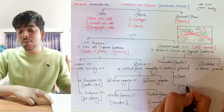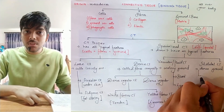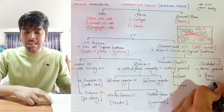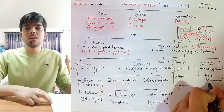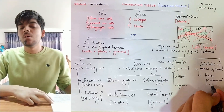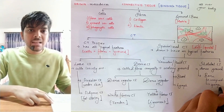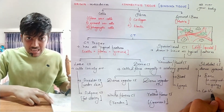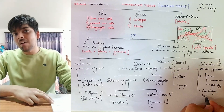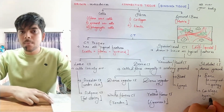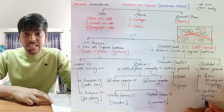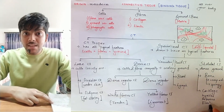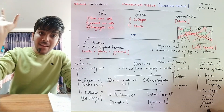Under vascular or fluid connective tissue we have blood and lymph. Under skeletal connective tissue we have bones — of two types: compact bone and spongy bone — and cartilage, which is of four types: hyaline cartilage, fibrous cartilage, elastic cartilage, and calcified cartilage. We will be dealing with all of these one by one. See you in the next video!